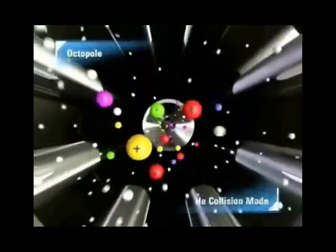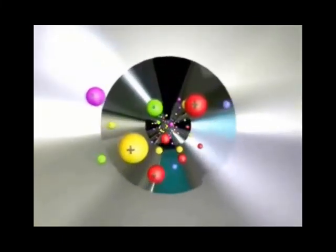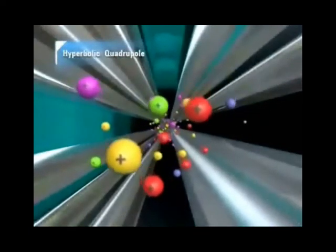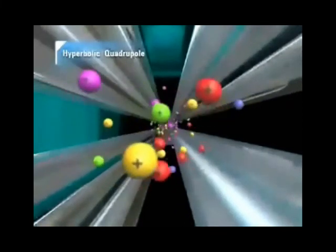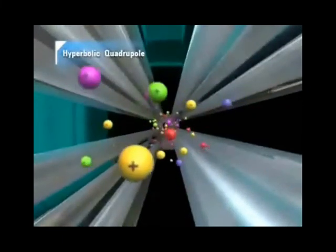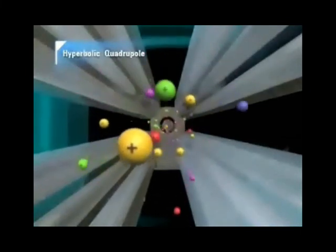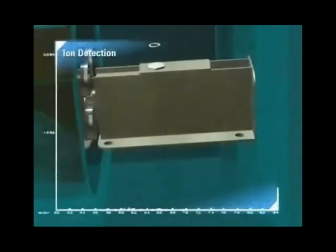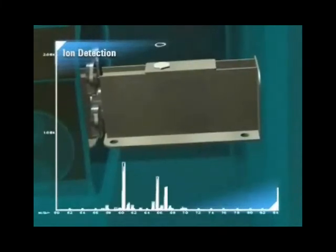The analyte ions leaving the ORS cell enter the quadrupole mass filter and are separated based upon mass-to-charge ratio. Only the target ion is stable and moves along the axis of the quadrupole. The quadrupole can rapidly scan across the mass range, passing each mass sequentially to the electron multiplier detector. The ions reaching the detector result in electronic signals that are passed by digital electronics to a multichannel scaler creating a mass spectrum in which the intensity at a given mass is proportional to the concentration of the isotope at that mass.